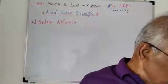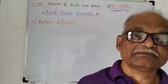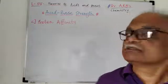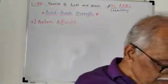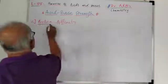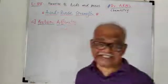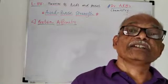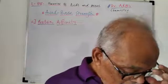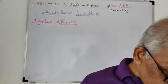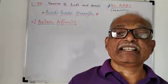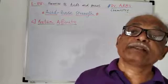Last time we also saw the thermodynamic quantities which can be used to measure the strength of acid-base. Today, we will see this third parameter — that is proton acidity — to measure the strength of acids and bases. We can consider the measurement of acid-base strength in terms of proton affinity.